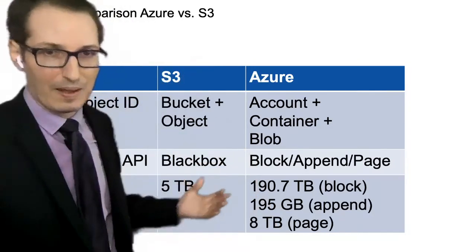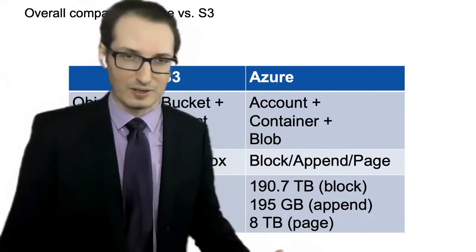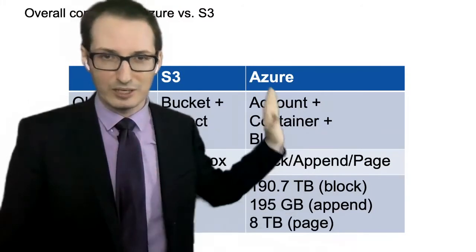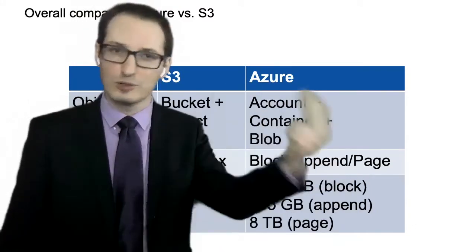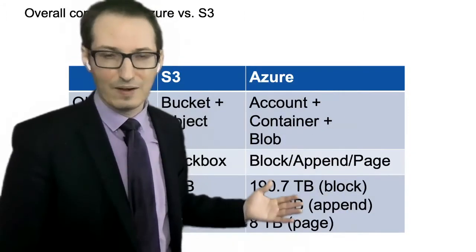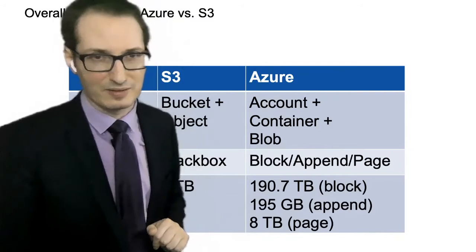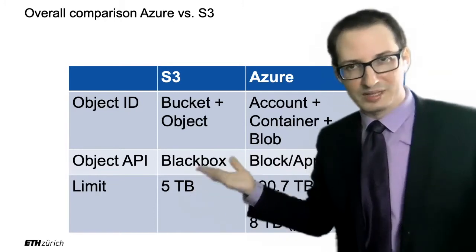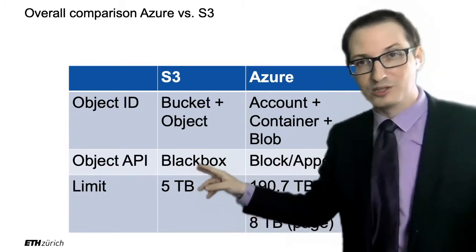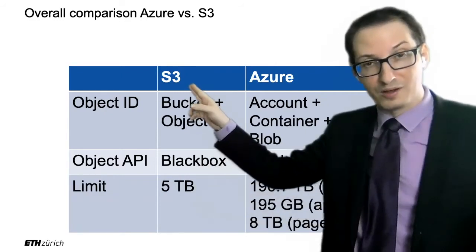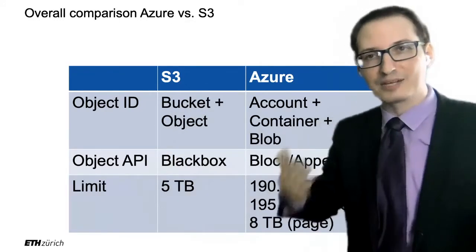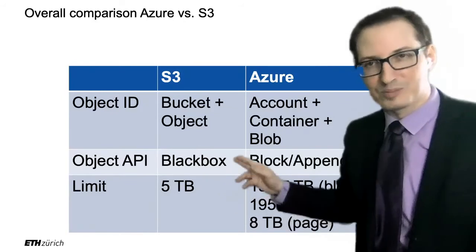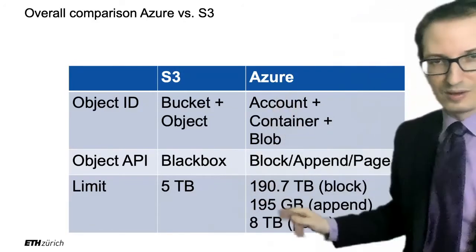The idea is the same as S3 — in Azure Blob Storage you store pictures, videos, data, websites, and the API is just slightly more fine-grained. S3 actually does allow blocks as well: if you have data above 5 gigabytes, it will require you to upload one block at a time — it's just not as explicit in the API as with Azure.